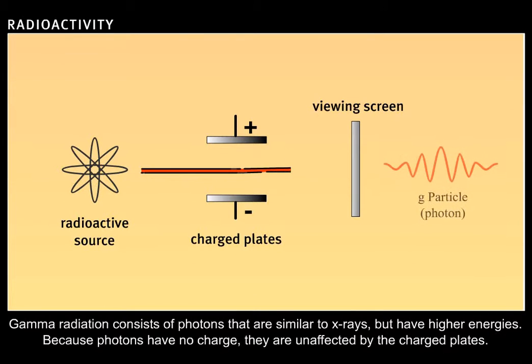Gamma radiation consists of photons that are similar to x-rays, but have higher energies. Because photons have no charge, they are unaffected by the charged plates.